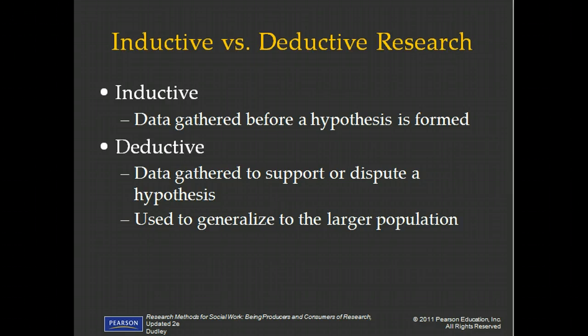Deductive research and deductive reasoning is the opposite. You see a problem or a circumstance and you speculate that the reason something is happening is because of a certain situation. For example, your hypothesis might be that people are more depressed in rural communities when they don't have access to traditional foods. That's your hypothesis, and then you would go out and test it to either prove it true or not be able to prove it true — different from asking the question inductively, like, I wonder why people in rural communities seem more depressed.